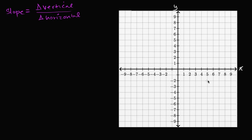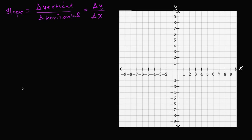So for example, if we're looking at the xy plane here, our change in the vertical direction is going to be a change in the y variable, divided by change in the horizontal direction, which is going to be a change in the x variable. Let's see why that is a good definition for slope.